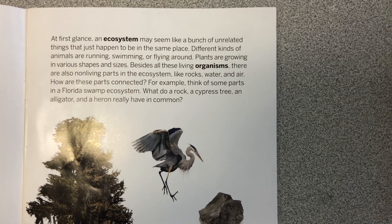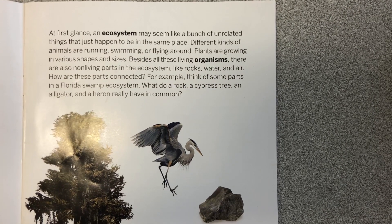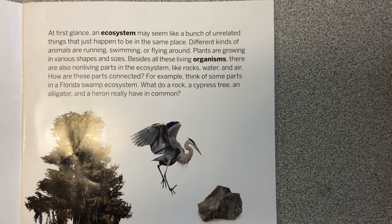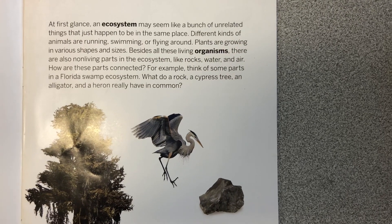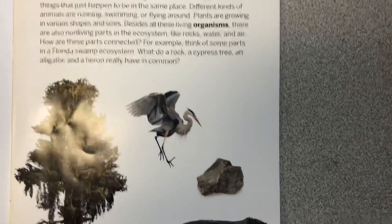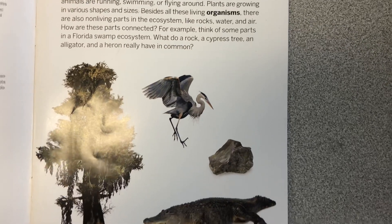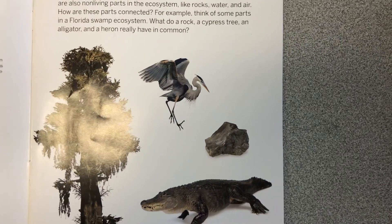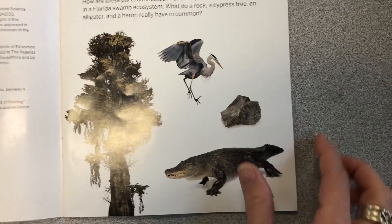How are these parts connected? For example, think of some parts in a Florida swamp ecosystem. What do a rock, a cypress tree, an alligator, and a heron really have in common?